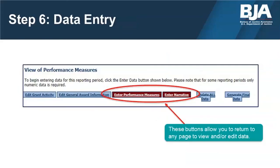By indicating that there was program activity during the reporting period, the PMT will generate the program questionnaire. The tabs you see will vary depending on the grant program you are working on. You must enter data in all fields for all required questions to move forward. If a question does not apply to your program activities and you are not able to skip it, you may enter zero — but you must explain all zero values. The option to add comments is provided at the end of your report and is available for every quarterly report. You can also use the comments section to explain any part of your report that may require further explanation.